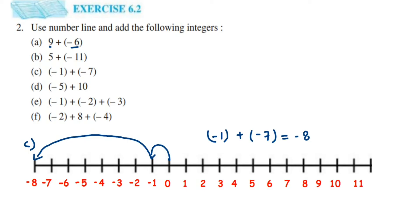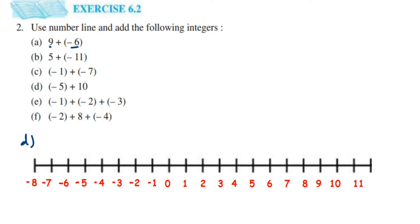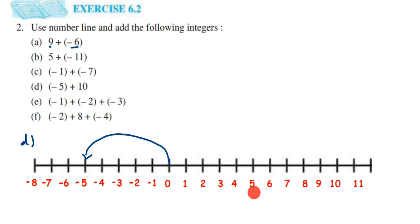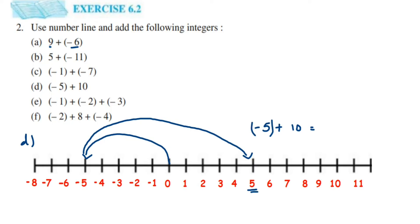Now the fourth question is minus 5 plus 10. Minus 5 means from 0 we go to minus 5. Now it is plus 10, which is a positive integer, so we move 10 steps towards the right side. Counting 10 steps from minus 5, we are reaching 5. So minus 5 plus 10 is equal to plus 5 — a positive integer.